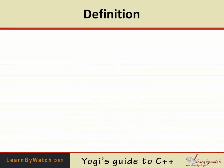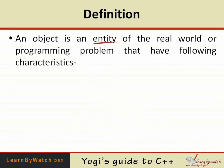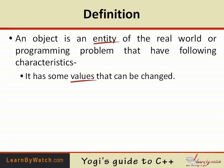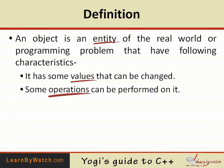So first thing first — what is the definition of an object? An object is an entity of the real world or programming problem that has some characteristics. It has some values that can be changed, and some operations can be performed on it. Remember these three things: first entity, second values, and third operations. An object is an entity that has some values and some operations can be performed on it. Memorize this definition because many times you may need to write it.